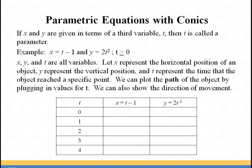Let's start by plugging in some values for t. If t equals 0, then x equals negative 1 and y is 0, so we plot the ordered pair (−1, 0). At one second, x equals 0 and y is 2. At two seconds the ordered pair is (1, 8). At three seconds the ordered pair is (2, 18). And at four seconds the ordered pair is (3, 32).